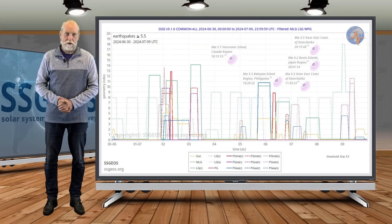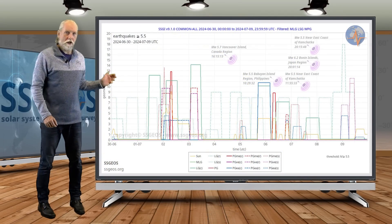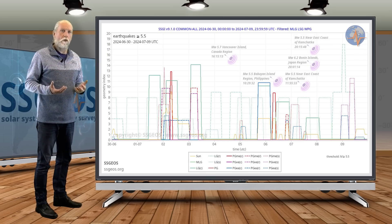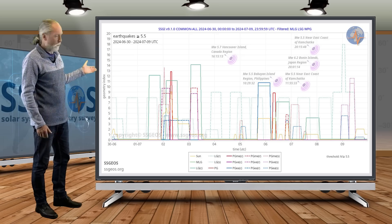Welcome to a new planetary and seismic update. You look at the SSGI graph from the previous time frame with a threshold of magnitude 5.5. This is the seismic activity that we had.